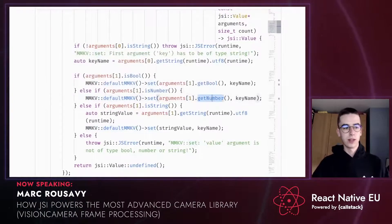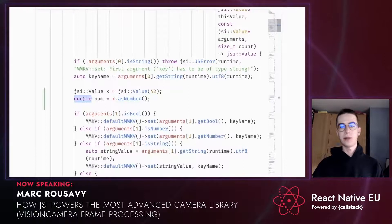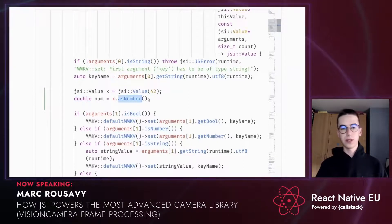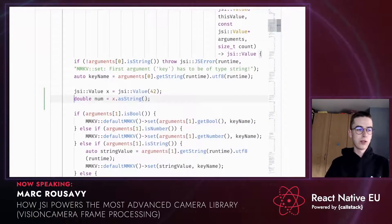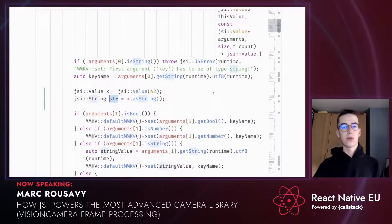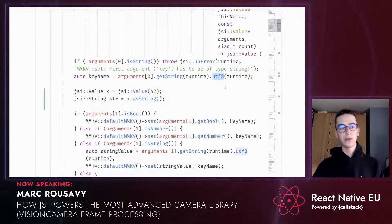Here's the actual implementation for MMKV — we simply set a value to the default MMKV instance. To convert a jsi::Value to a number, you use asNumber() which returns a double. Same thing for booleans. For strings, there's a jsi::String wrapper — asString() returns a jsi::String, and you can convert it to an actual C++ std::string using the utf8() function.